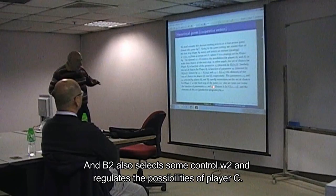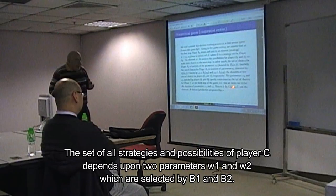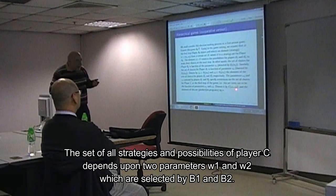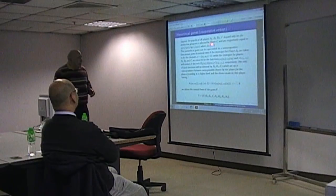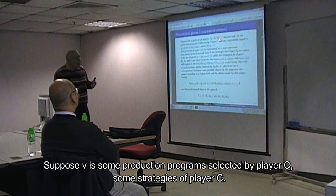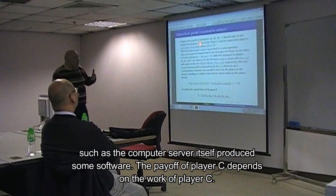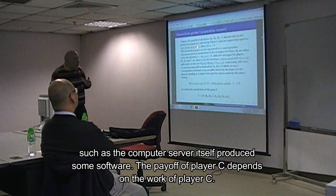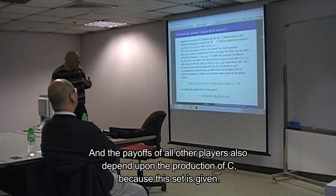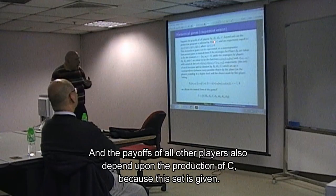B2 also selects some control W2 and regulates the possibilities of player C. Thus, the set of all possibilities of player C depends upon two parameters, omega 1 and omega 2, which are selected by B1 and B2. Suppose V is some production program which is selected by player C — that is some strategy of player C. He is producing something; if it is a computer center, he produces software. The payoff of player C depends upon what he is producing, and the payoff of all other players also depends upon the production of C.